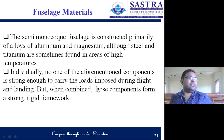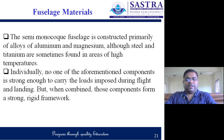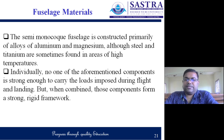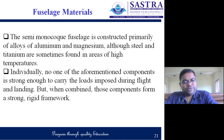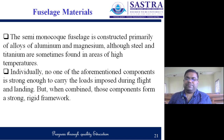The semi-monocoque fuselage is constructed primarily of aluminum or magnesium alloys, although steel and titanium are sometimes used in areas of high temperature, particularly where the engine is attached — titanium alloy can be used there. Individually, no single component is strong enough to carry the loads imposed during flight and landing, but when combined, all sub-components give sufficient strength to overcome the flight loads.